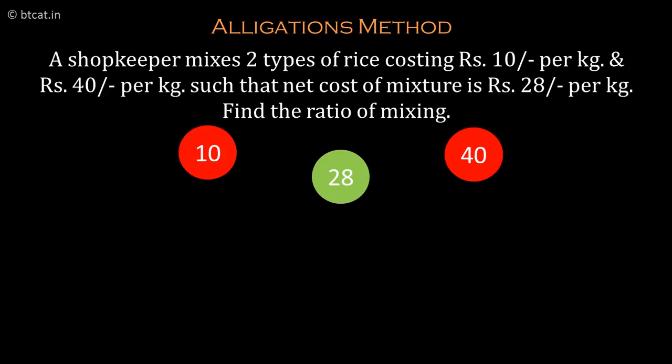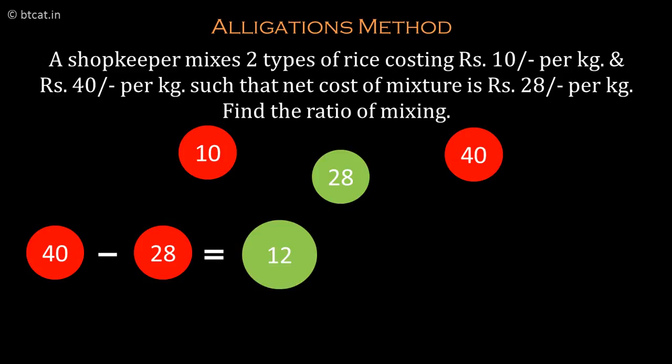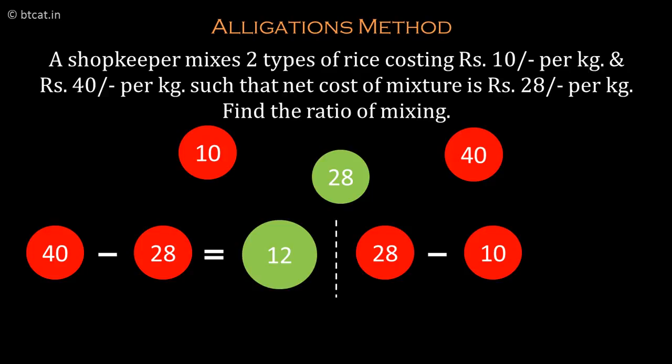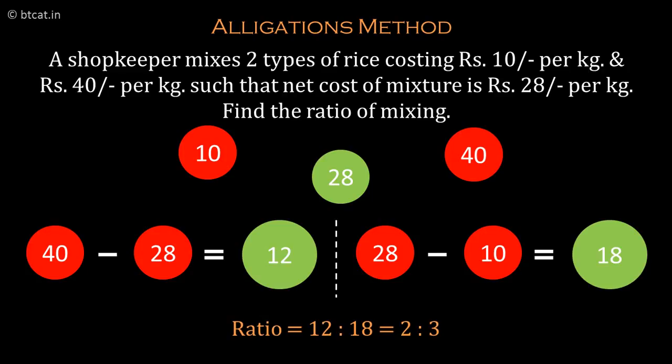Now you do a simple plus-minus operation. You do 40 minus 28 — that is the dearer quantity minus the resultant — giving 12. Then you do 28 minus 10 — that is resultant minus cheaper — giving 18. This direct ratio 12 is to 18 is the ratio of mixing, which simplifies to 2 is to 3 — exactly what we started with.